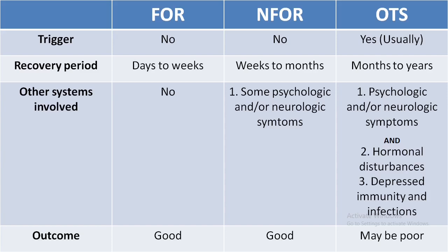The third category is Overtraining Syndrome. Here, the fall in performance despite rest goes on for months, usually more than two months. Generally, overtraining syndrome is triggered by some external factor like illness or some internal factor like psychological stress. Apart from a drop in performance, other organ systems are also affected. The athlete may have hormonal changes due to endocrine disturbance, frequent infections due to immune system disruption, and psychological and neurologic symptoms — the most common being depression and anxiety.